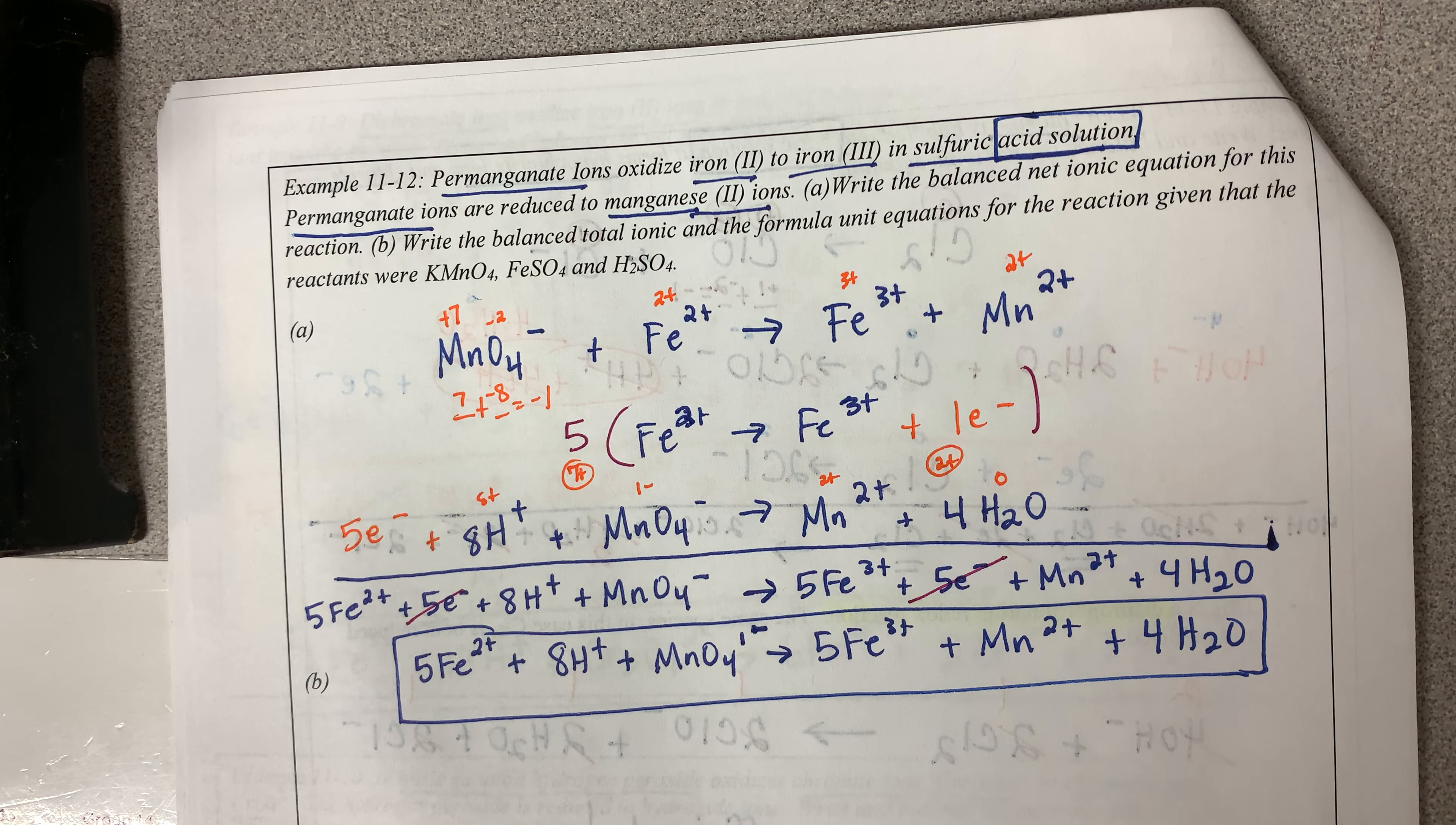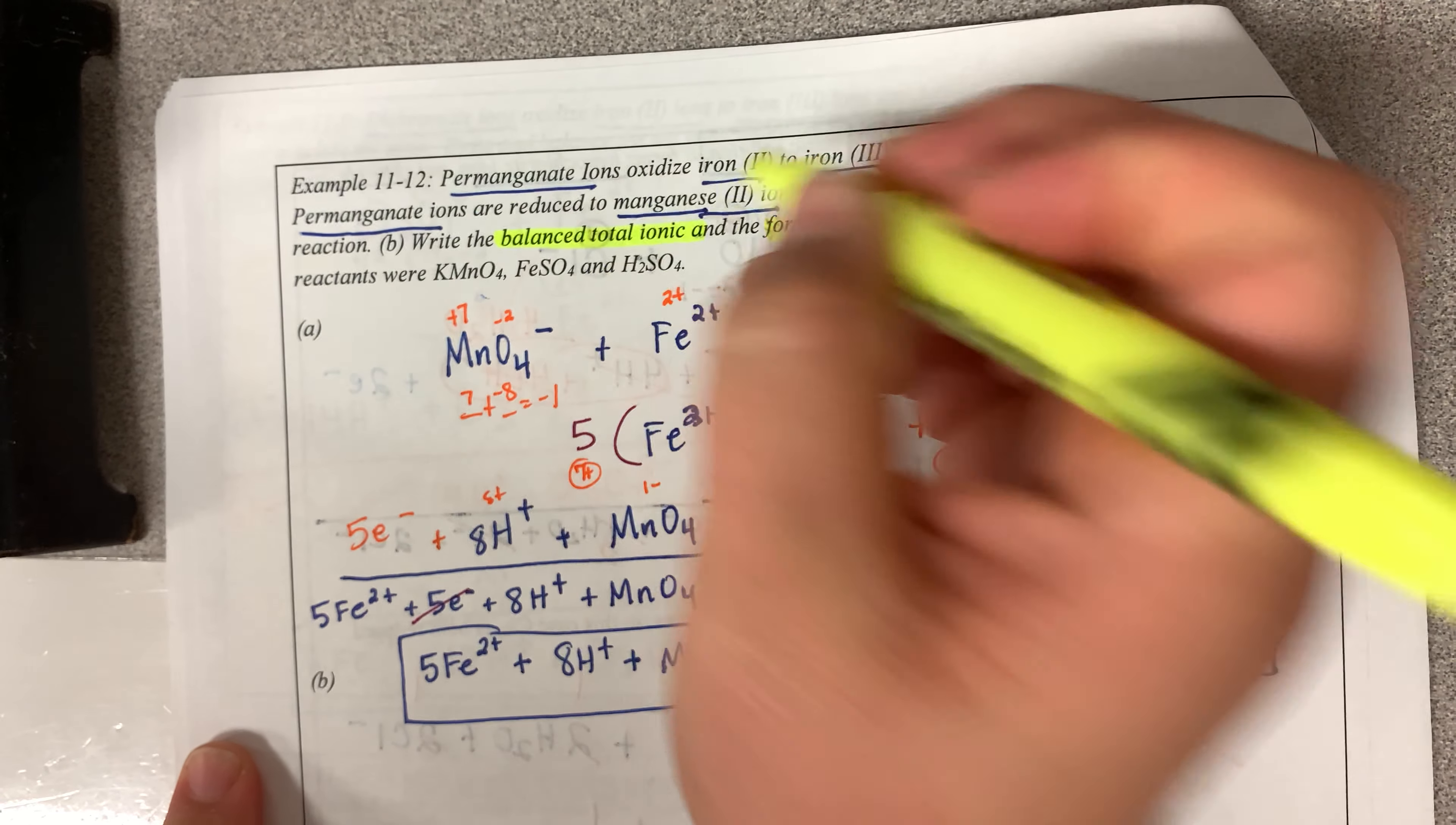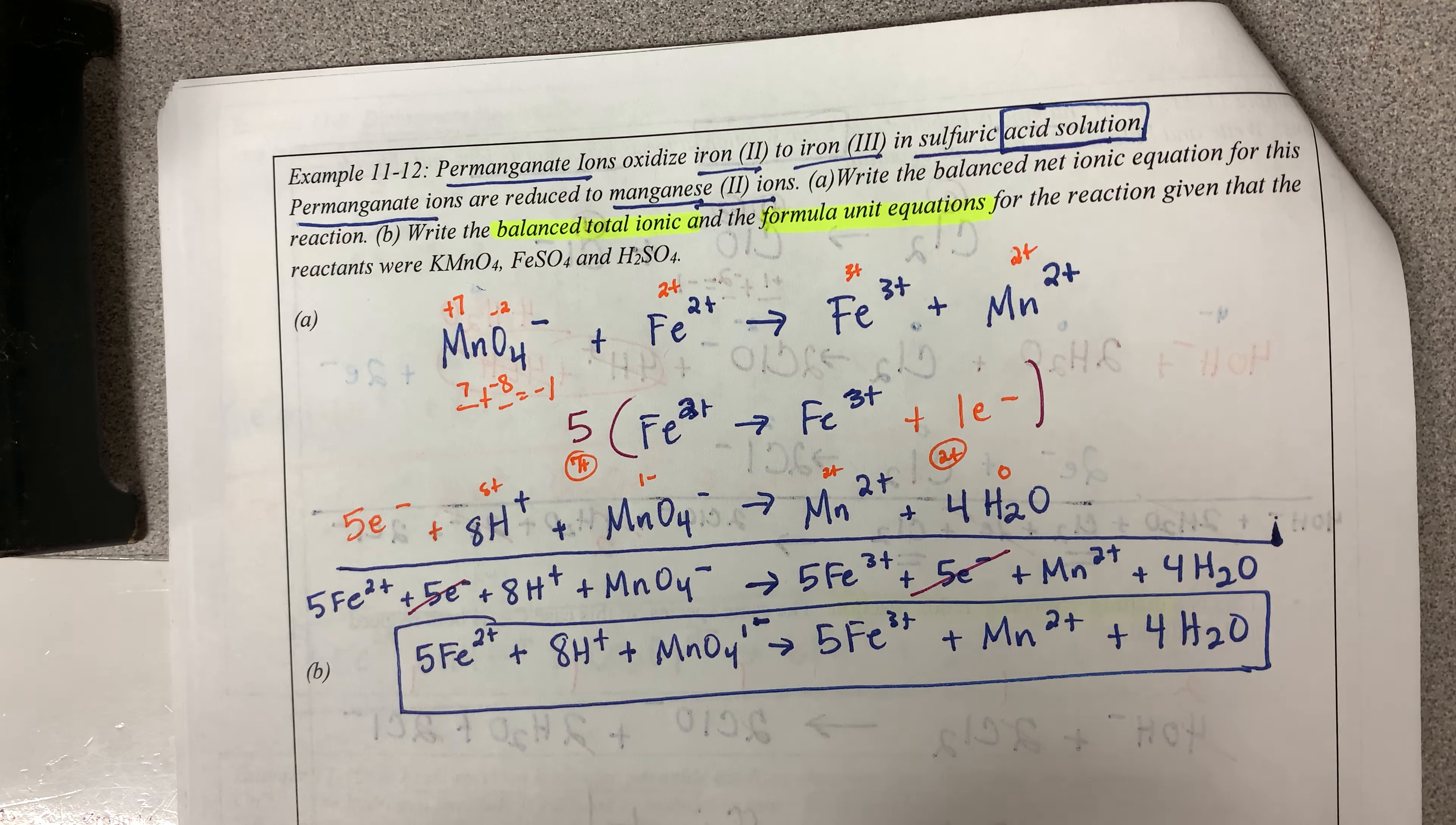So part B says write the balanced total ionic and the formula equations. So these are the original equations that must have existed if this is the net ionic for the reaction, given that the reactants were,